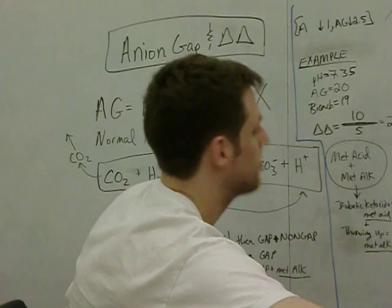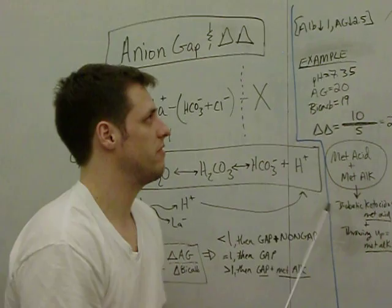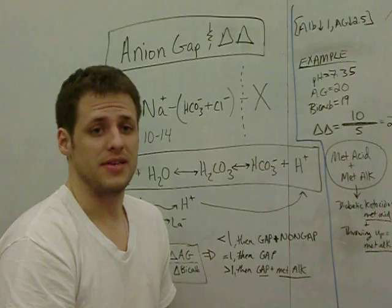So for every 1, the albumin is decreased from normal, anion gap will be artificially decreased 2.5. So if you have an albumin level that's down by 2, then your normal anion gap, instead of being 10, will now be 5.